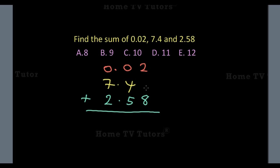On the right-hand side of the column where we have 2 and 8, we add that up. We have 10. So we write down 0, carry 1 to the next column. In this column now, we have 1 plus 4 plus 5, which gives us 10. Write down 0.